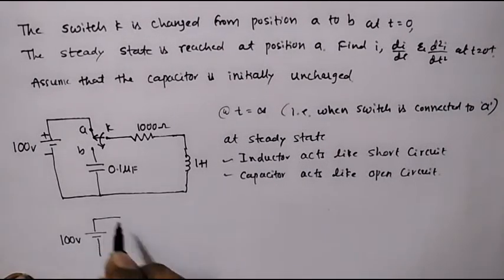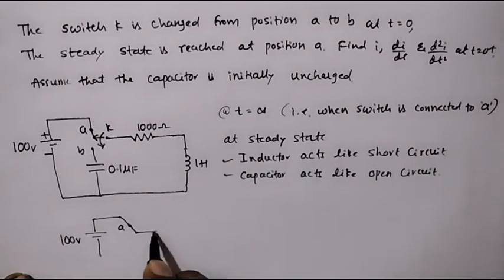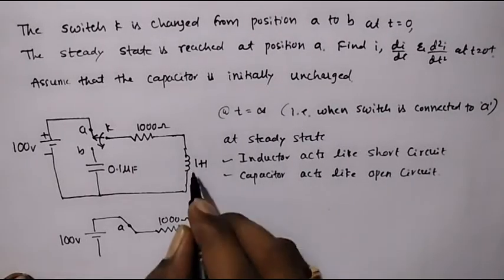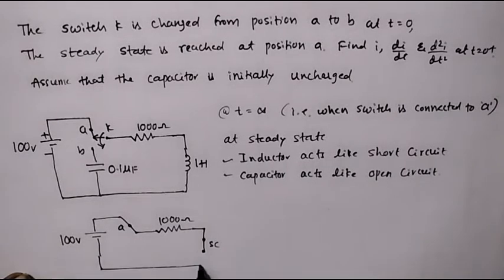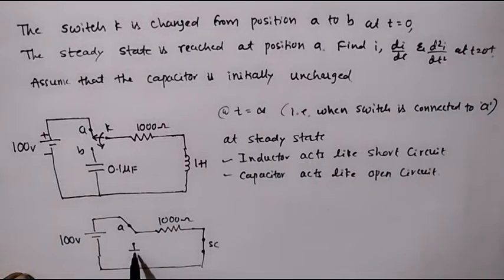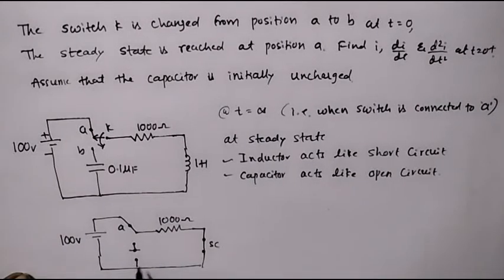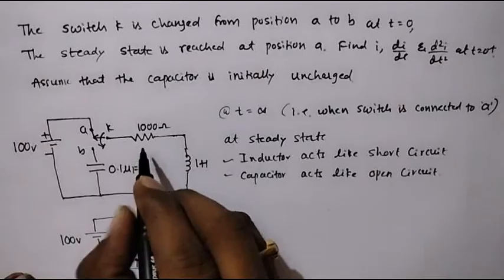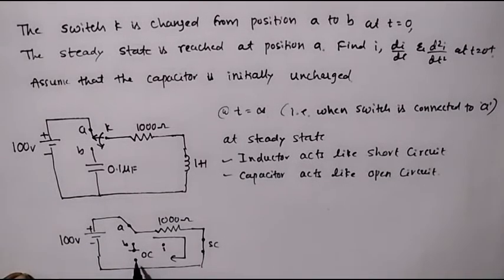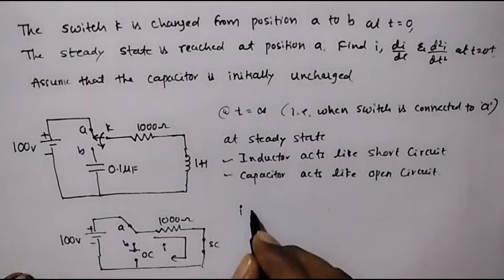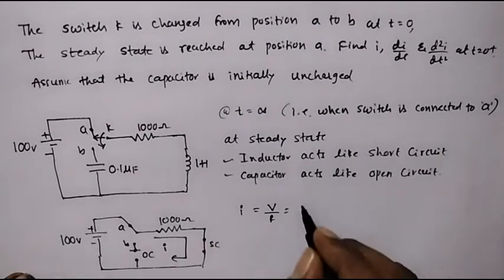100 volts is connected as it is. This is position A, and the resistor of 1000 ohms is connected here. The inductor acts like a short circuit, so I have shorted it. The capacitor acts like an open circuit. This is position B. The current flows in the circuit because of the voltage source. No current flows through the capacitor branch because it is open, so this is like a single loop. We will find the current in this loop: I equals V by R.